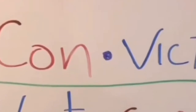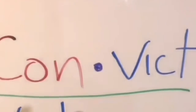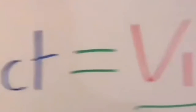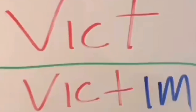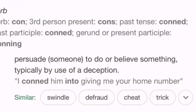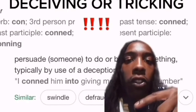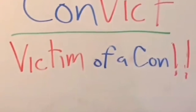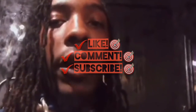The word convict has a hidden meaning. To understand its true meaning, you have to break the word down into vict and con. The word vict comes from the Latin root meaning to conquer. Vict is also the root of the word victim. Victim breaks down into vict and I'm, literally translating into 'I'm conquered.' The word victim is defined as a person who is tricked or duped, or a living creature killed as a religious sacrifice. The word con is defined as persuading someone to do or believe something by use of deception. So a convict is literally a victim of a con — and the government is the con artist because they tricked you into playing this legal game.